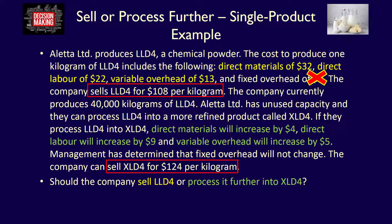We did not analyze the 40,000 kilograms volume. It is identical for both alternatives — we can process 40,000 kilograms of LLD4 into 40,000 kilograms of XLD4. Because the volume produced is identical, we can perform our incremental analysis on a per kilogram basis. Note that if additional processing had resulted in different quantities, we would have to use total revenues and total costs. In this case, since volume doesn't change, 40,000 kilograms is irrelevant.